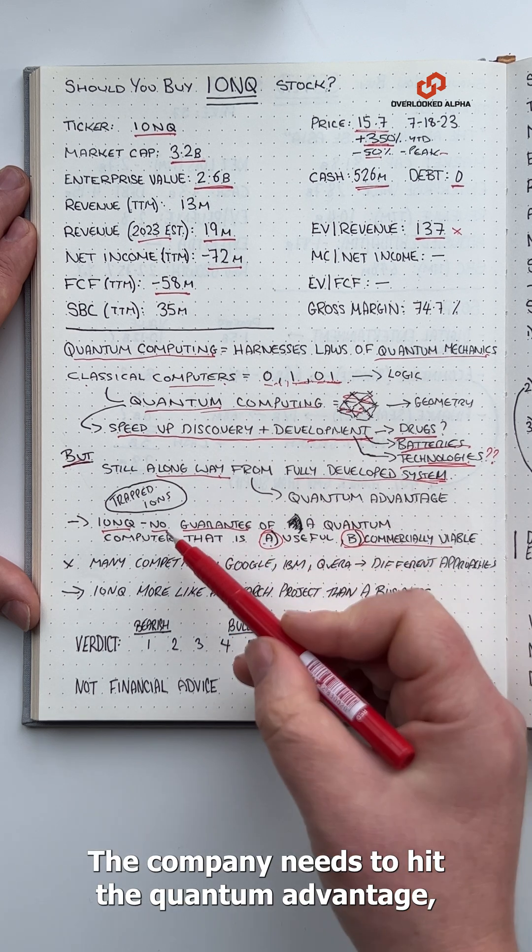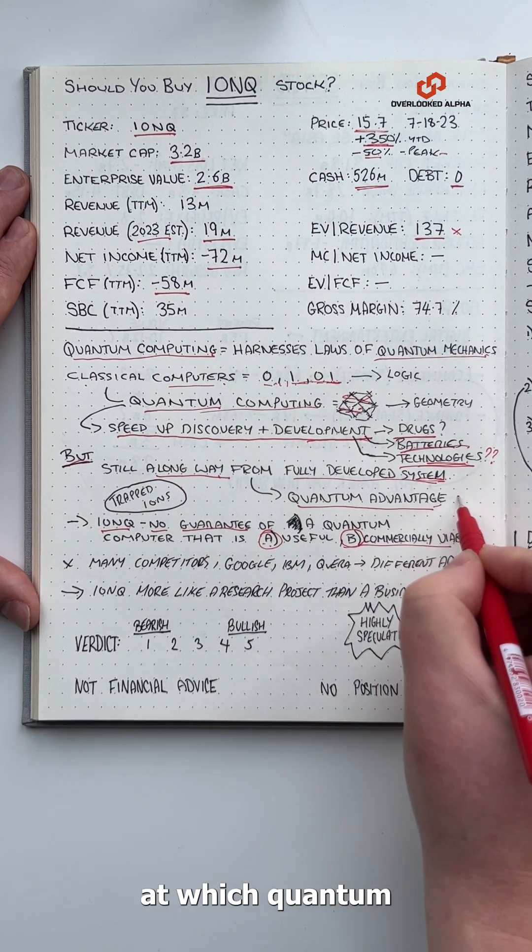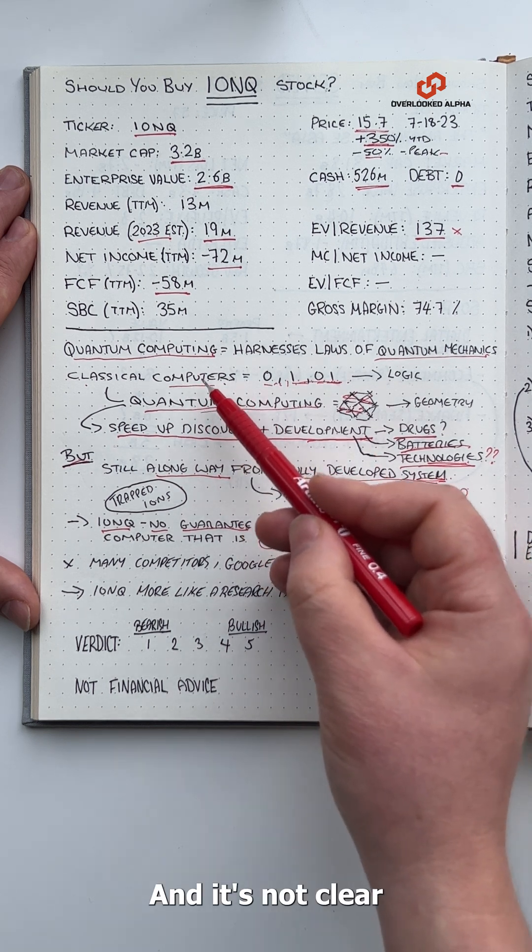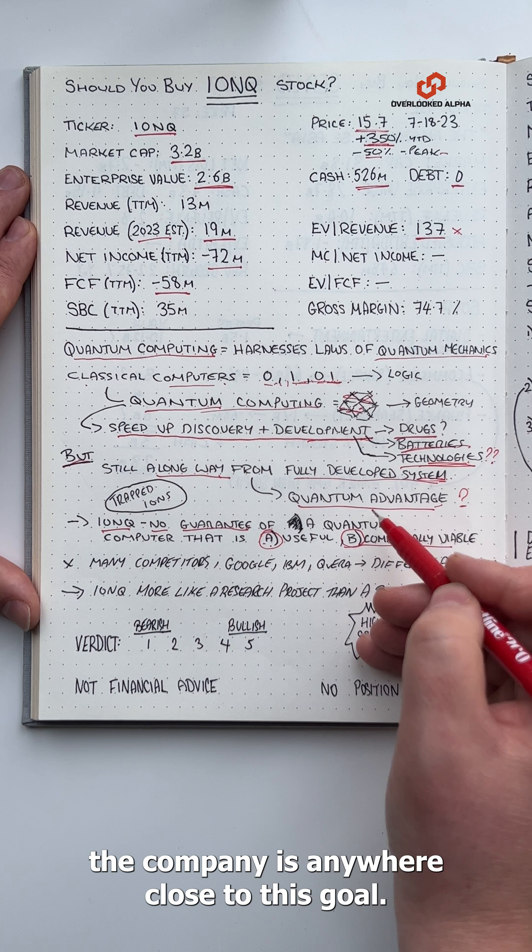For IonQ to be a success, the company needs to hit the quantum advantage, which is the point at which quantum computing overtakes classical computing. And it's not clear the company is anywhere close to this goal.